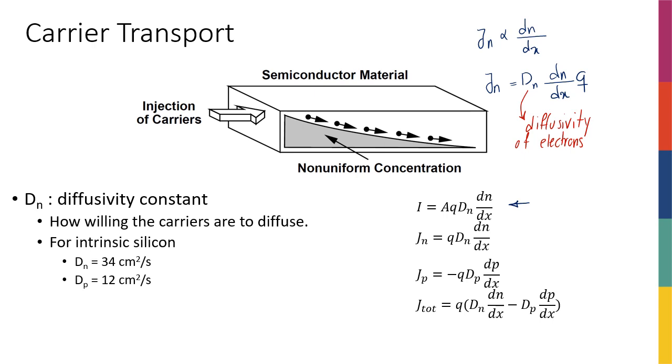So this diffusivity constant is defined as how willing the carriers are to diffuse. And for intrinsic silicon, we have these numbers. Dn for electrons is 34, and Dp is 12, both with a unit of centimeter squared per second. Again, confirming that electrons are going to be more diffusive than holes by a factor of approximately 3. For holes, I can write the same kind of expression. jp is going to be negative q, Dp times dp over dx.